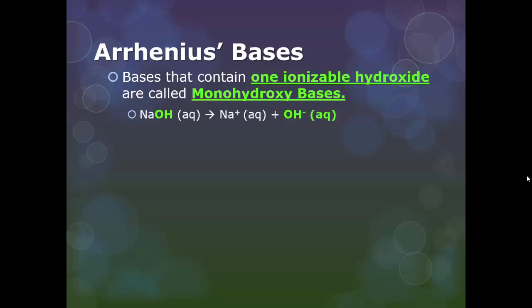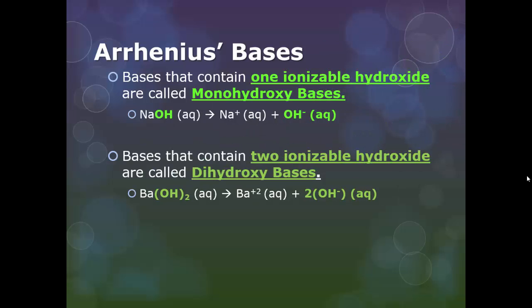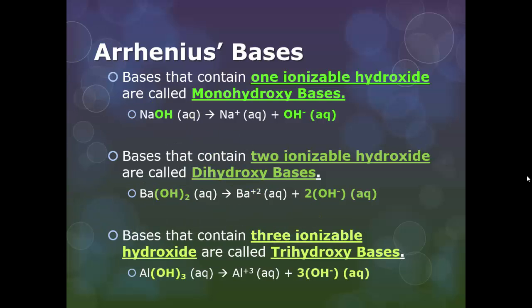The same rule applies with bases, though instead of calling them protic, we call them monohydroxy. For example, sodium hydroxide is a monohydroxy base because it only makes one hydroxide. Same thing if you have two ionizable hydroxide ions - we call those a dihydroxy base, like barium hydroxide. The reason why there's two? Well, barium's got a plus two charge, hydroxide's only got one, so you have to make sure the charges equal out. That's why you need two hydroxides. And finally, if you have three ionizable hydroxides, you are what we call a trihydroxy.